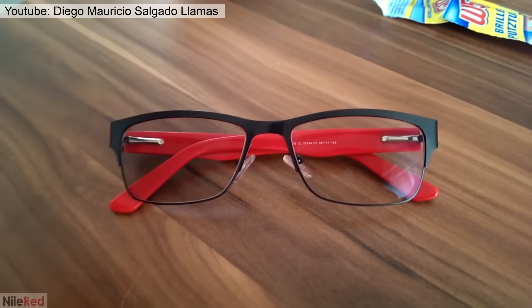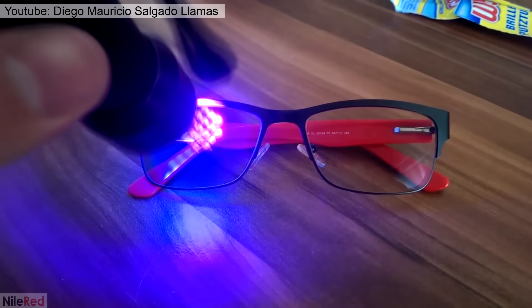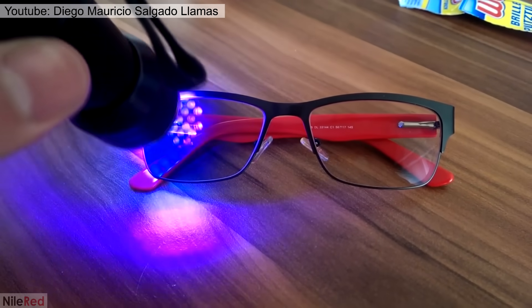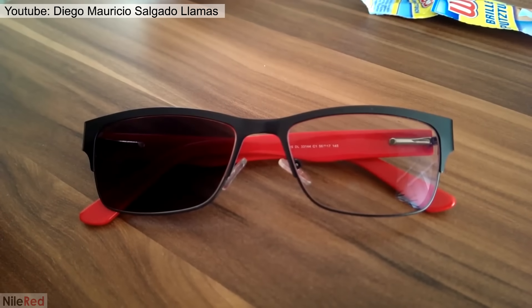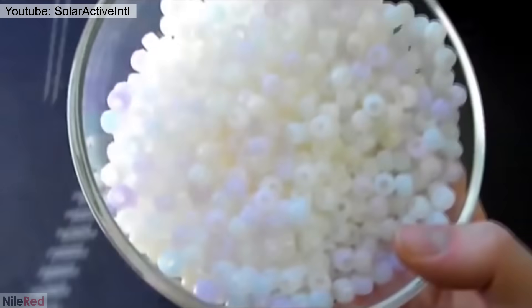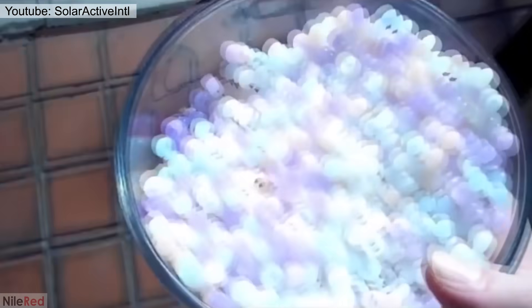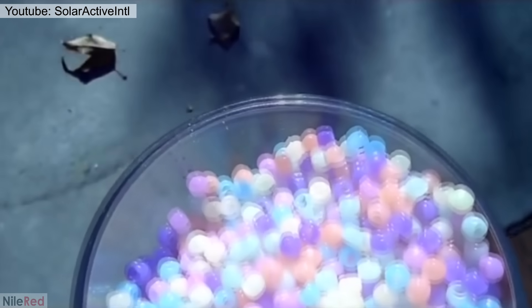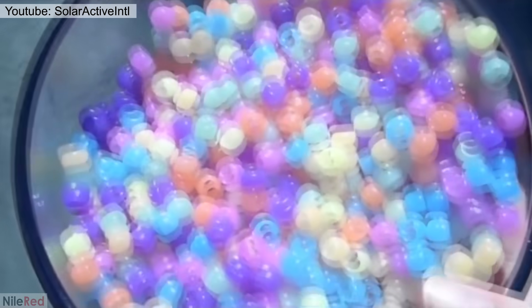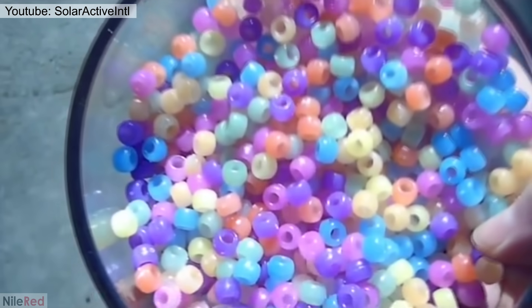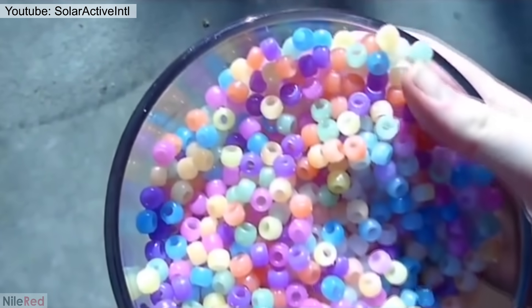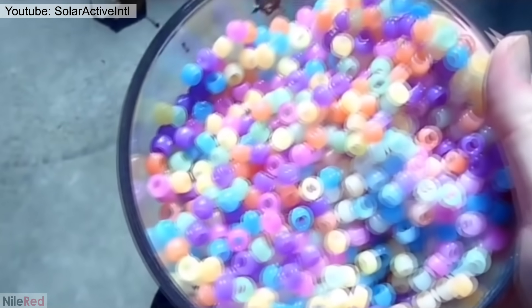There are some photochromic compounds that are relatively fast in both directions, and they're used to make things like those glasses that darken when you go outside. Other compounds also transition between different colors and are used in many products like toys, clothing, and cosmetics. I don't plan to at the moment, but in the future, I might try to make some of these other photochromic compounds.